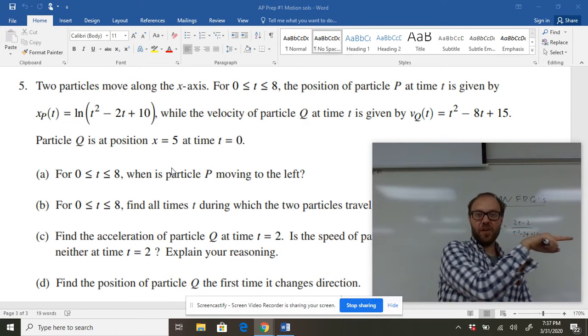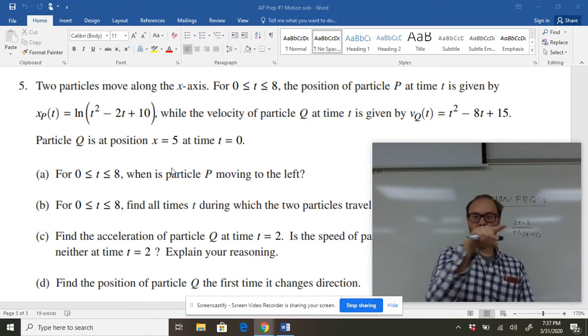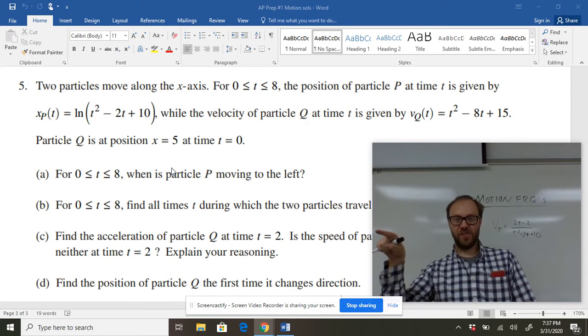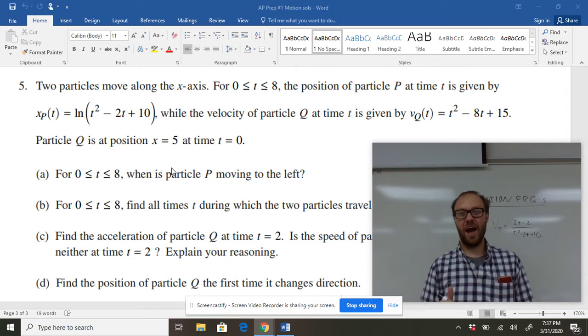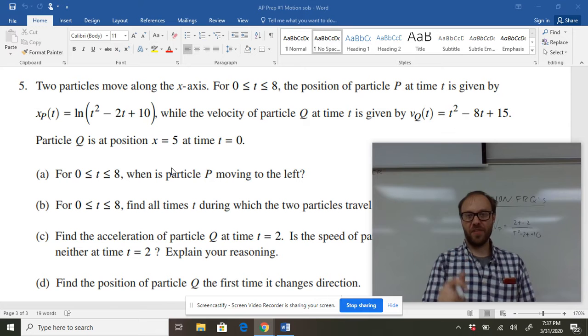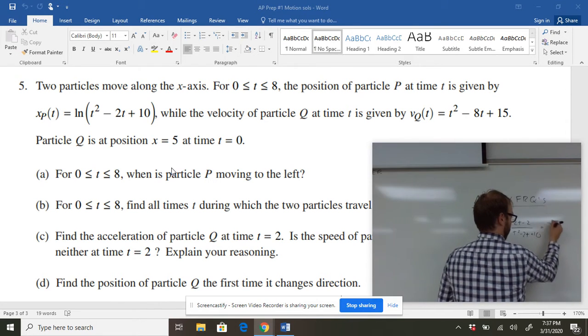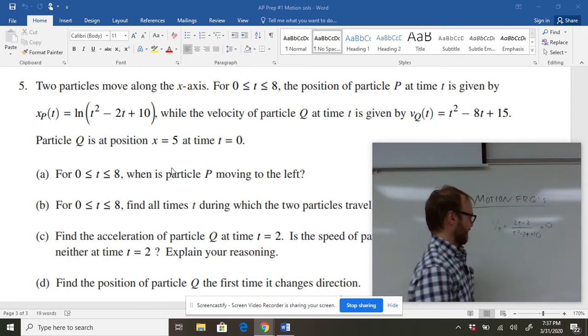Remember when something's moving forward and it switches to going backwards, when it goes backwards and switches to moving forwards, you're going from a positive to a negative or negative to a positive. Those changing points are going to happen when the velocity is zero. That's where it might change directions. So let's figure out where the velocity is zero.